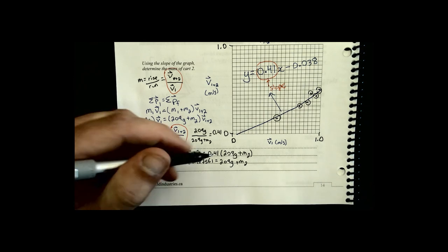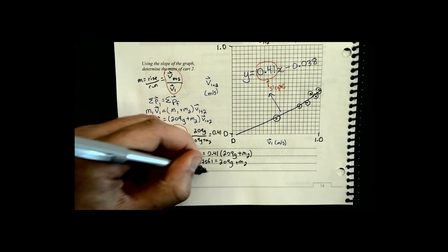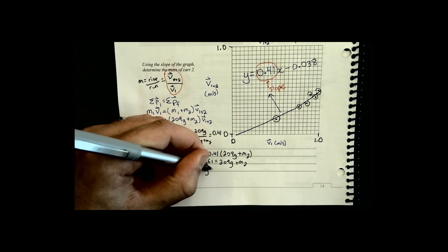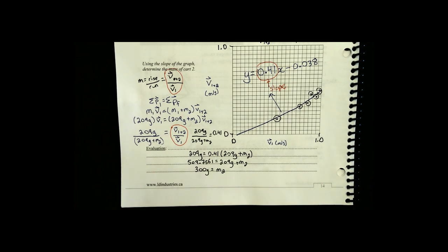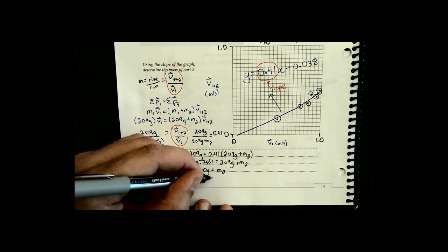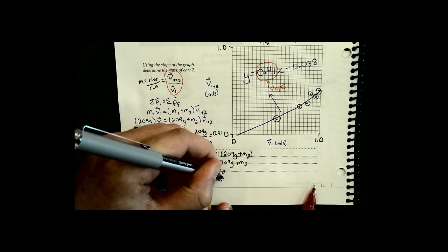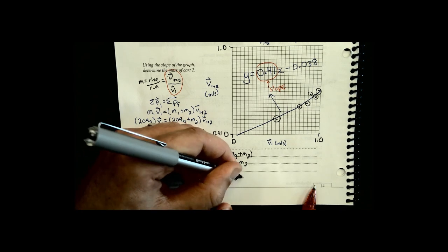And then I'll just subtract 209 from both sides. So I get that mass 2 to 2 sig digs works out to 3.0 times 10 to the 2 grams.